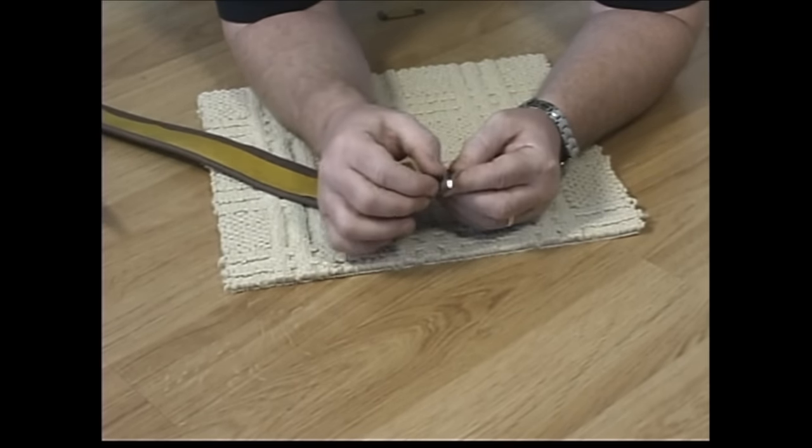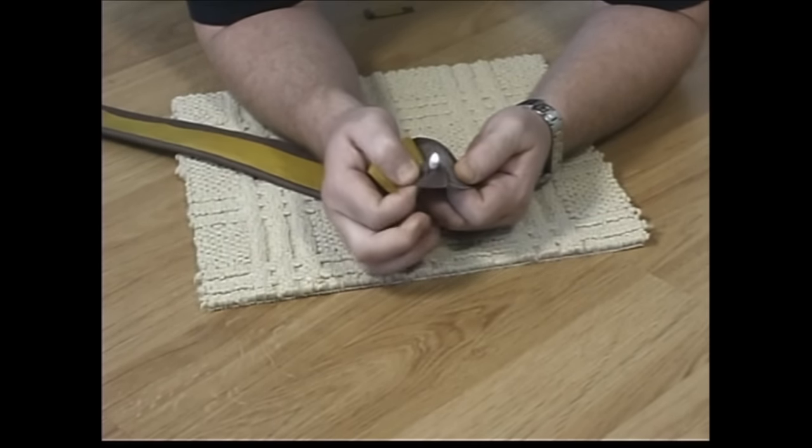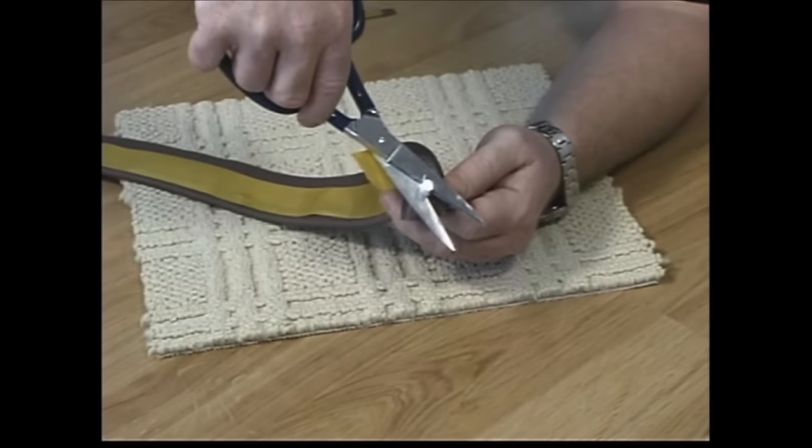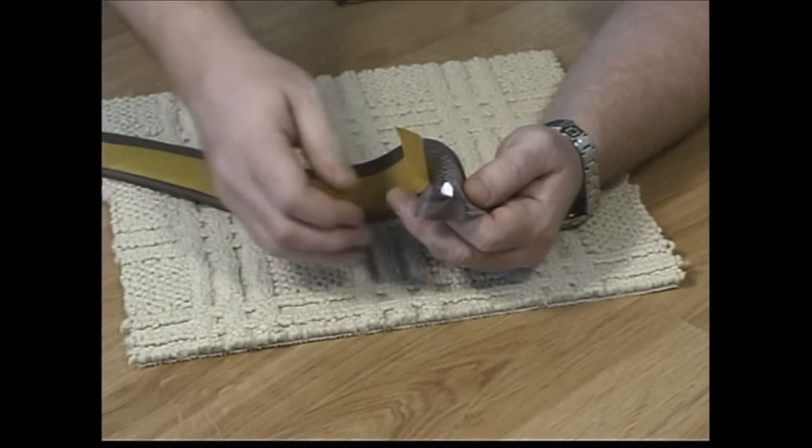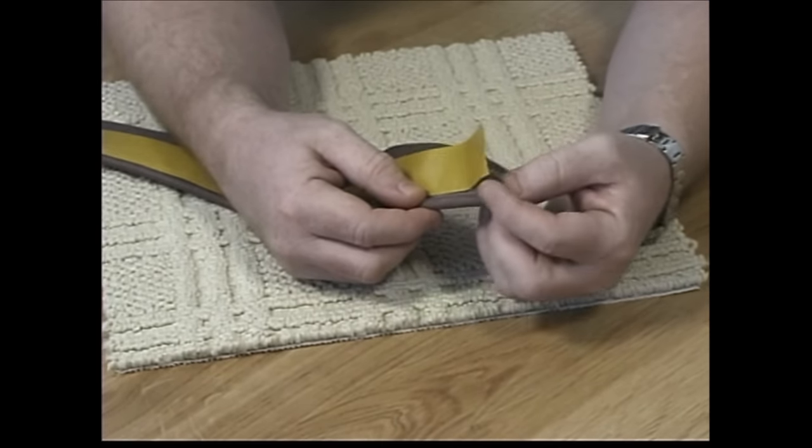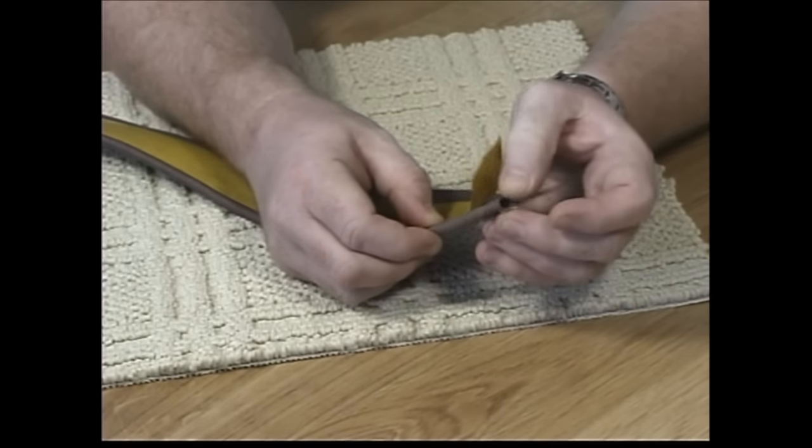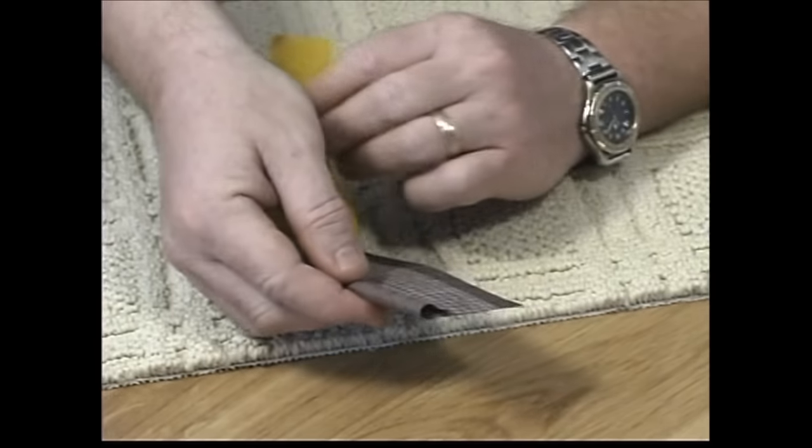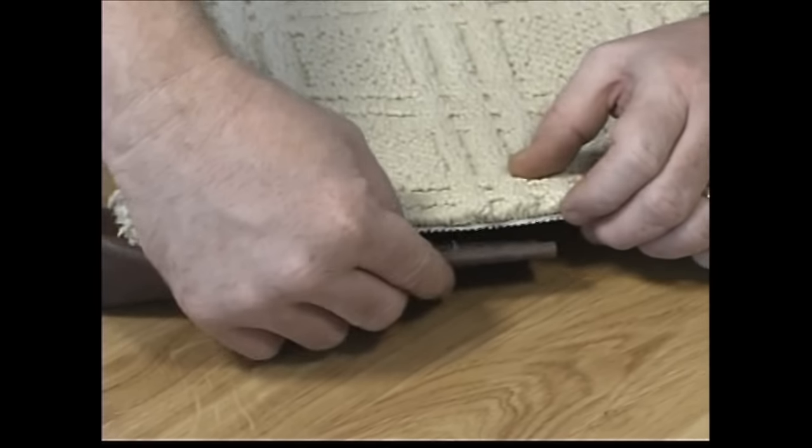For regular binding, start by peeling back the material to expose the white piping. Snip approximately one half inch of the piping and fold the binding cover back into position leaving a half inch hollow tube. This will be important when connecting the finishing end with the start end.